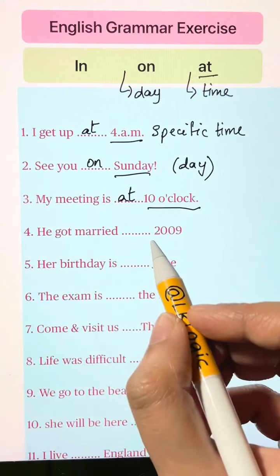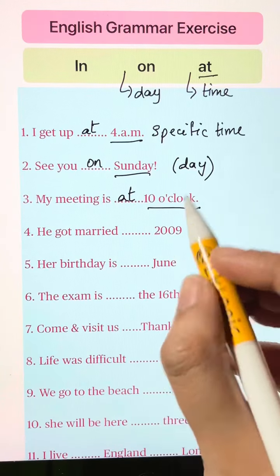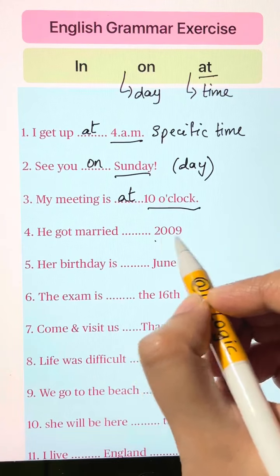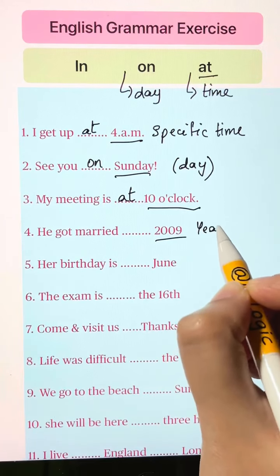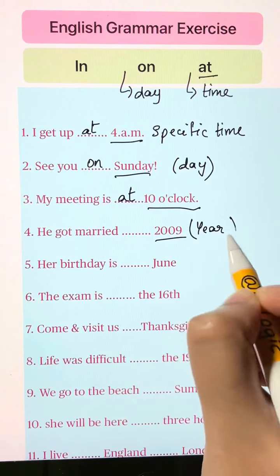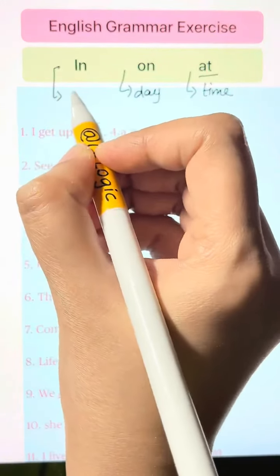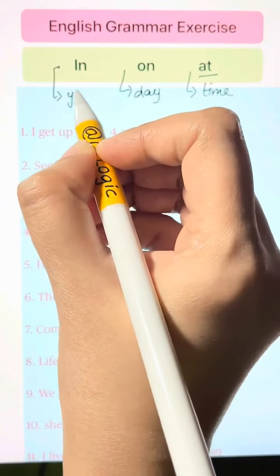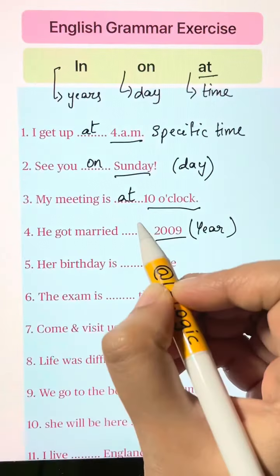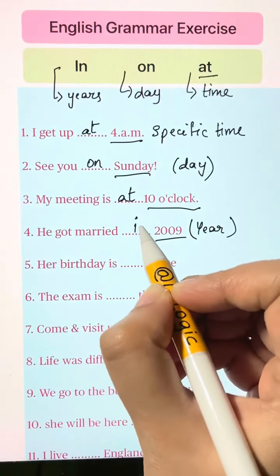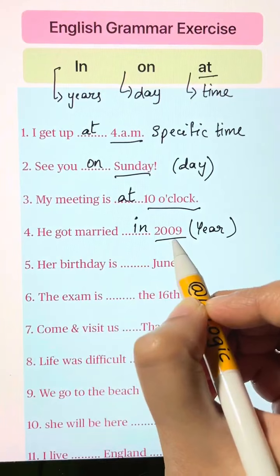He got married blank 2009. Here we have a year mentioned. We use 'in' when we are talking about years. So he got married in 2009.